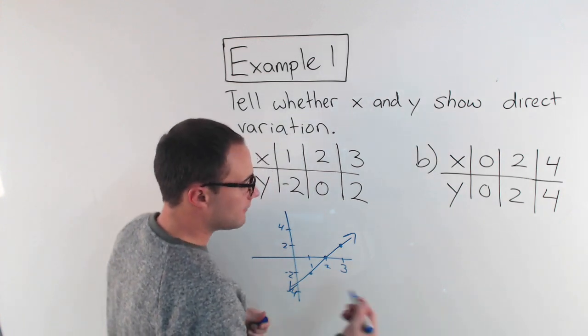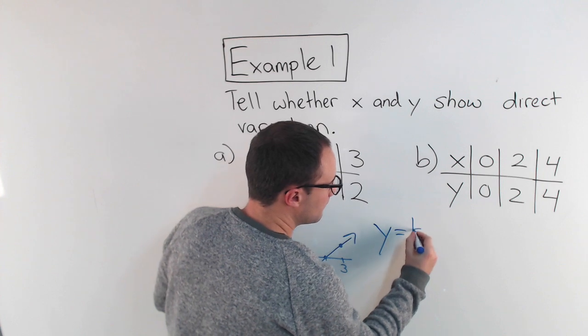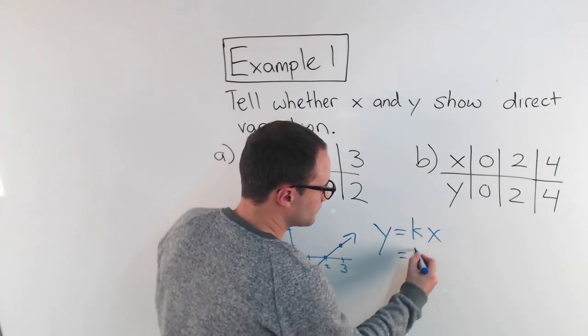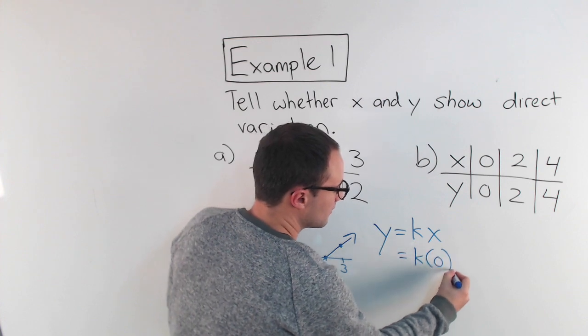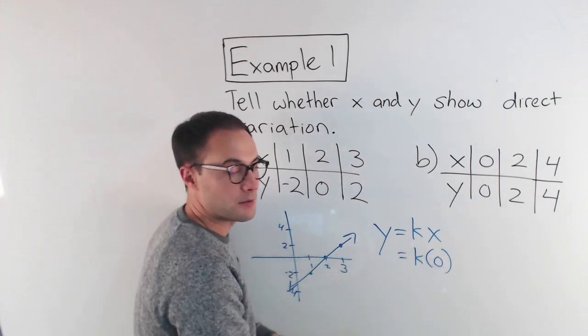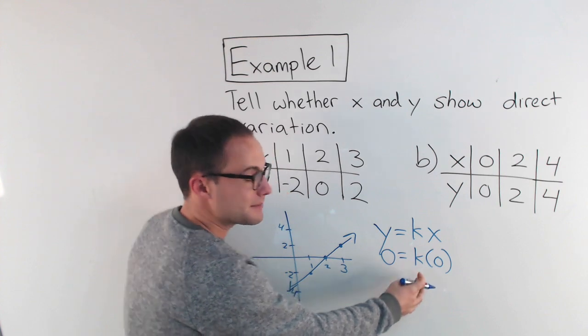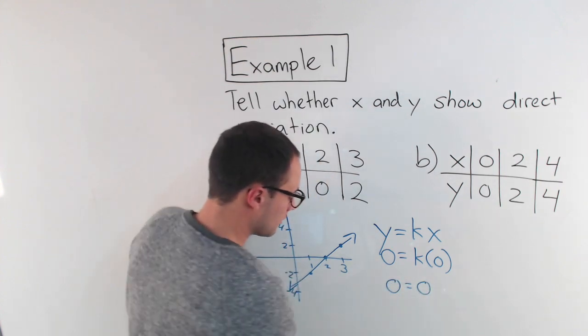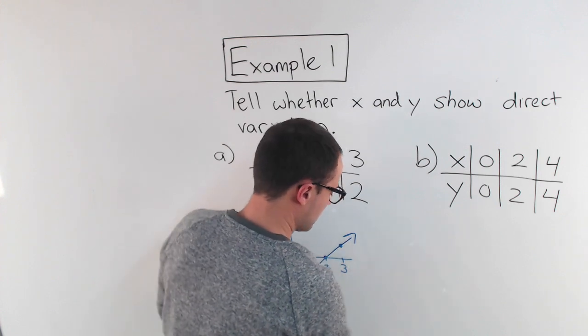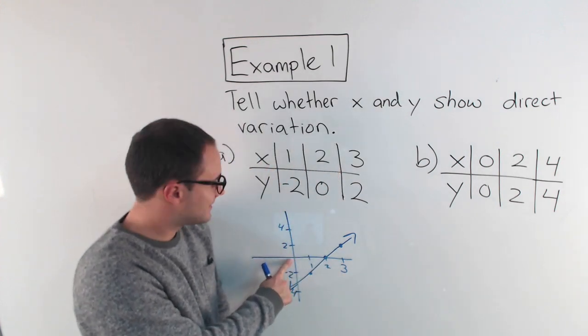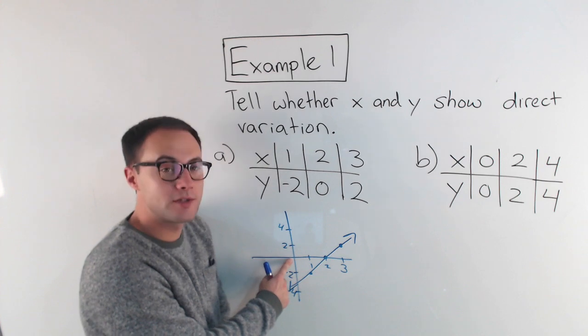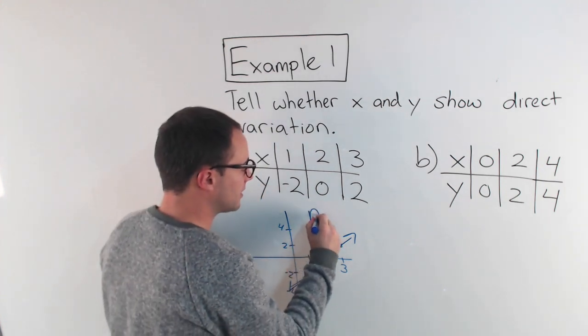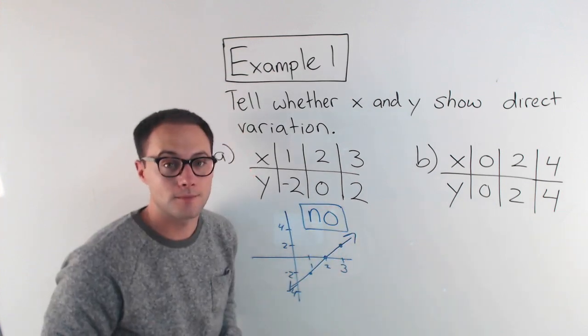And the reason, if you think about it, if the equation needs to look like that, if x is 0, well, what does y have to be? y has to be 0 as well, because 0 times any number will give you 0. Right? So here, notice the line does not go through my origin. It does not go through 0, 0. So x and y here, do they show direct variation? And the answer is no. They do not.